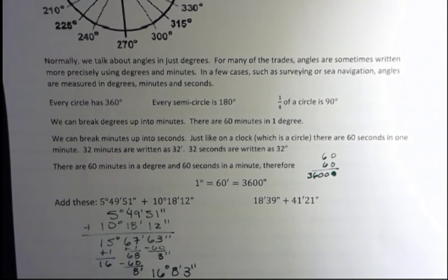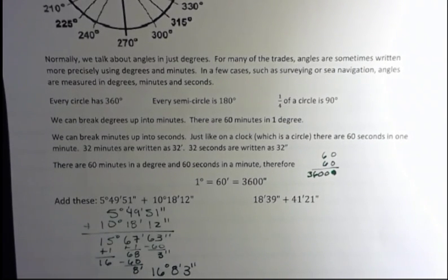So the thing to remember here is that I'm carrying 60, and I'm taking away 60, but I'm only putting one under there. Because 60 seconds is one minute. 60 minutes is one degree. So we take away 60, and we add one to the column to the left.